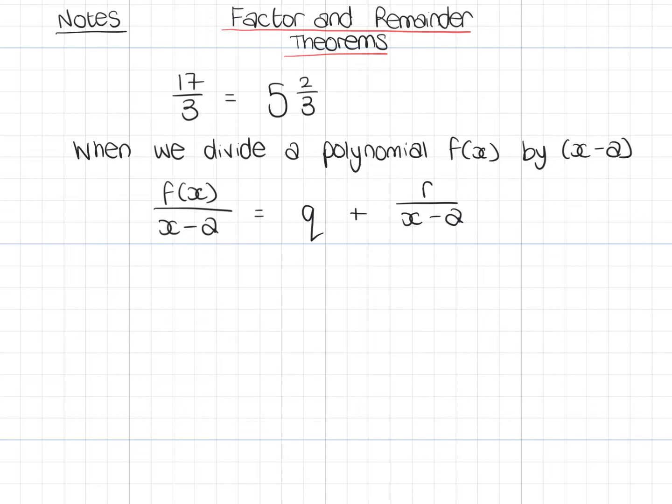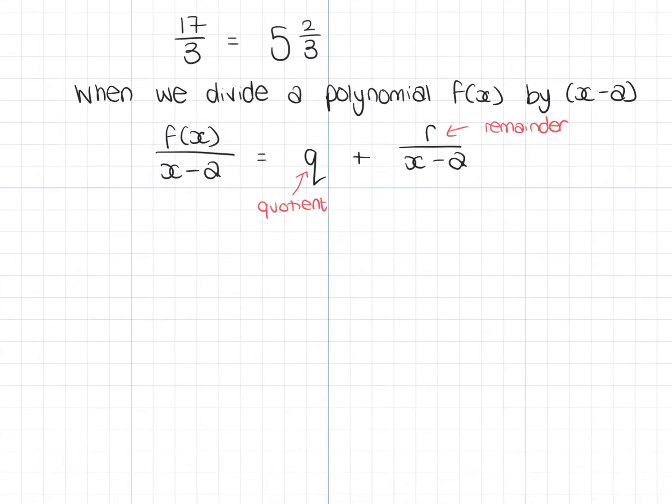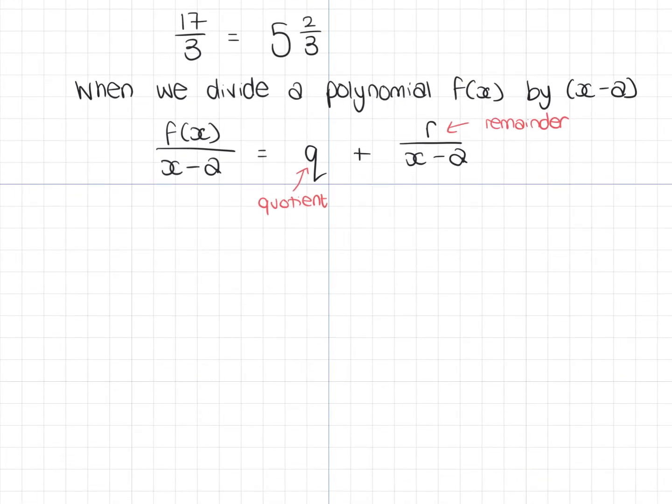It's kind of similar to how we did it with the numbers above. This q stands for the quotient, and this r, if you remember, is what the remainder was. The one above the remainder was 2. 3 went into 17 five times, remainder 2, and the x minus a is equivalent to the 3.